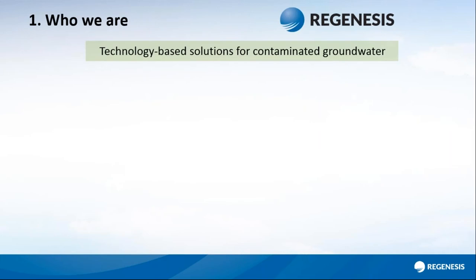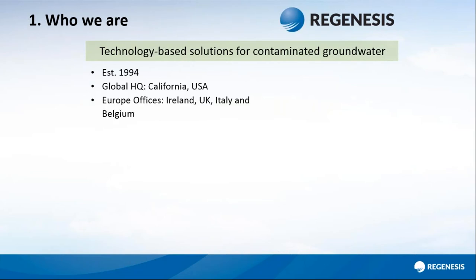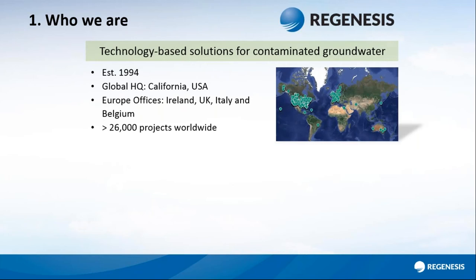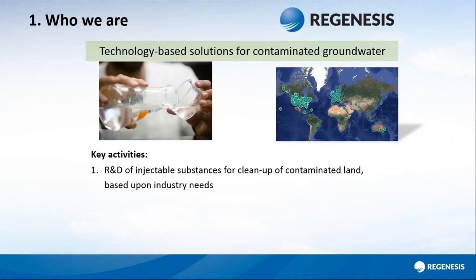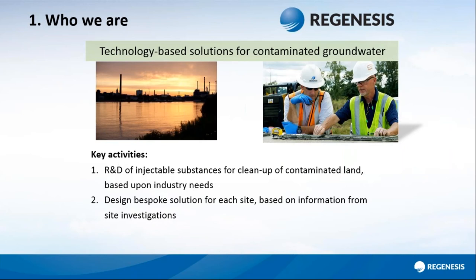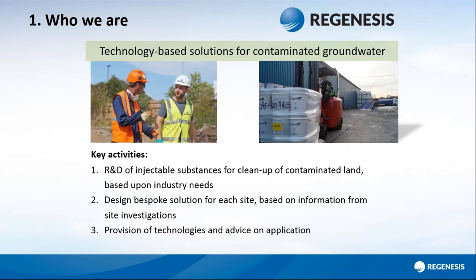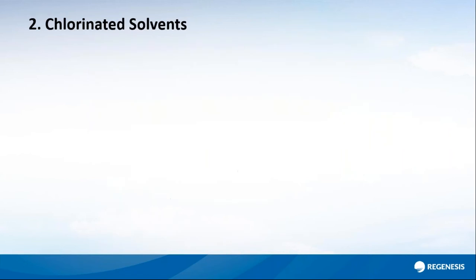Regenesis provides injectable substrates for the remediation of contamination in groundwater. We've been involved in enhanced reductive dechlorination since about 1998 when we produced our first product. We're based on R&D, so we produce these products from our laboratories in California. We then help consultancies and contractors use these products to do in-situ remediation by doing bespoke designs per site, or we can come to the site and apply the products for you.